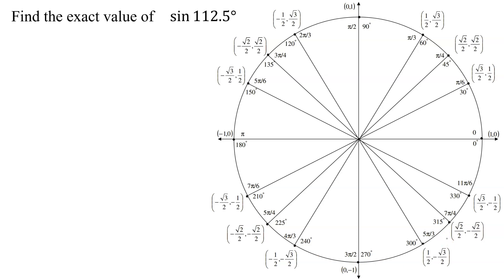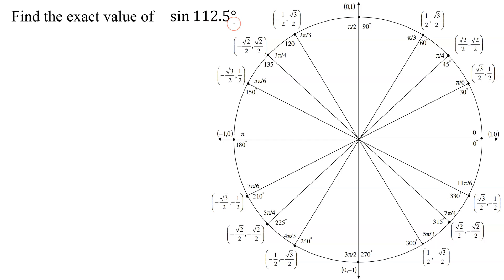But there's one problem. 112.5 degrees is not on my unit circle. In fact, all the angles measured in degrees on the unit circle are whole numbers. So there's no way to add or subtract two angles on the unit circle to get the angle I'm looking for.